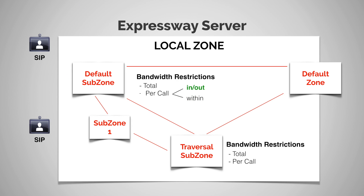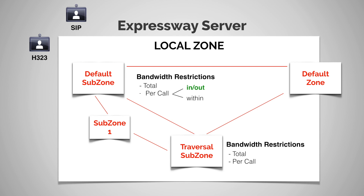In/out means that an endpoint registered to the default subzone is calling an endpoint registered to subzone one. Because they're in two different sub zones, they're going to use the in/out per call bandwidth restrictions. In/out would also be used for two endpoints in the same subzone but using different protocols — for example, if one endpoint was using H.323 and the other was using SIP. Even though they're in the same subzone, it's a traversal call, so the call has to go out of the default subzone to the traversal zone and then back in.